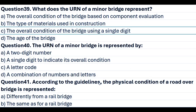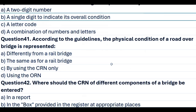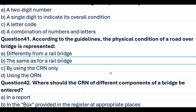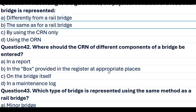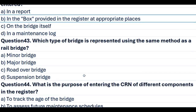Question 40. The ORN of a minor bridge is represented by: A. A two-digit number. B. A single digit to indicate its overall condition. C. A letter code. D. A combination of numbers and letters. Answer B. A single digit to indicate its overall condition. Question 41. According to the guidelines, the physical condition of a road over bridge is represented: A. Differently from a rail bridge. B. The same as for a rail bridge. C. By using the CRN only. D. Using the ORN. Answer B. The same as for a rail bridge. Question 42. Where should the CRN of different components of a bridge be entered? A. In a report. B. In the box provided in the register at appropriate places. C. On the bridge itself. D. In a maintenance log. Answer B. In the box provided in the register at appropriate places.